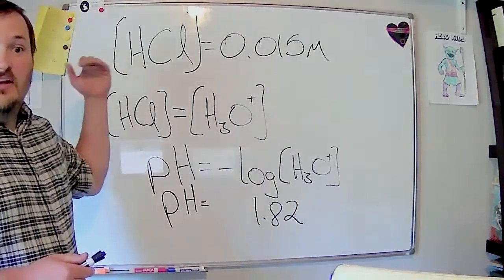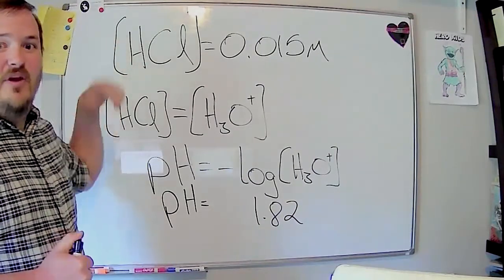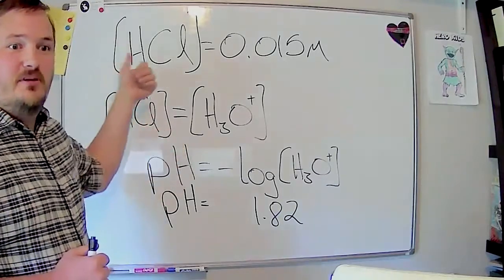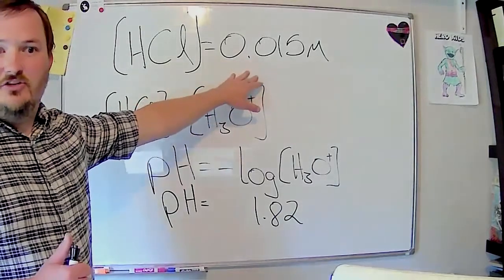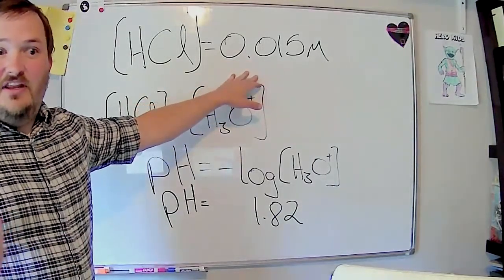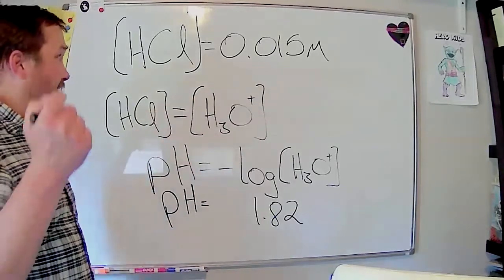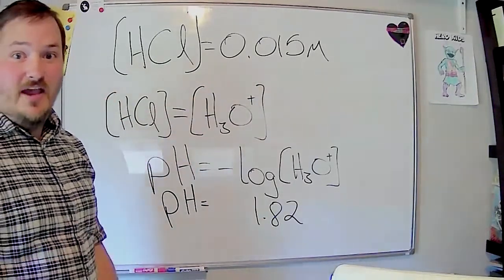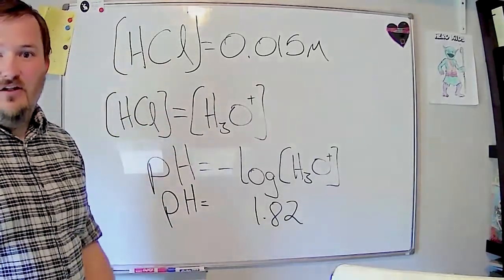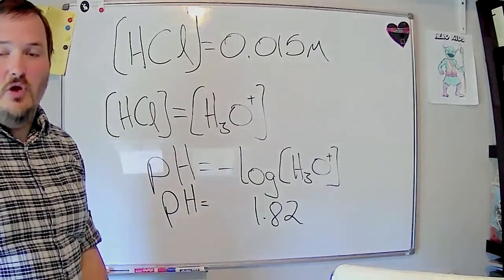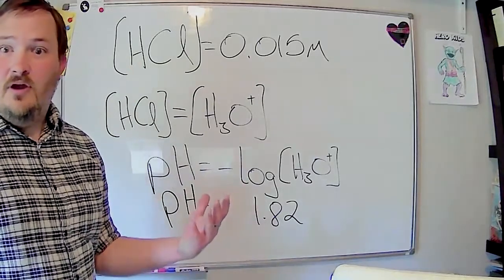About the only way that these can get trickier than that is if we're using up some of our HCl - if we have a reaction happening so that we're using up some of our strong acid. Then that's going to change this - it won't stay as this concentration, right? But really, all that is, that's just an excess reactant problem just like we practiced with stoichiometry, right? pH is frankly one of the main reasons we practice excess reactant problems.